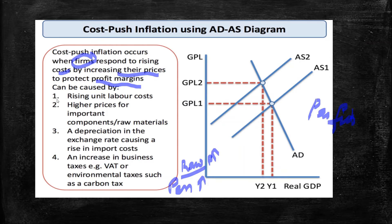Cost-push inflation can be caused by rising unit labor costs — that is, labor cost increases. It can also be caused by high prices for important components and raw materials, meaning the price of raw materials increases. Another cause is depreciation in the exchange rate, which causes a rise in import costs.